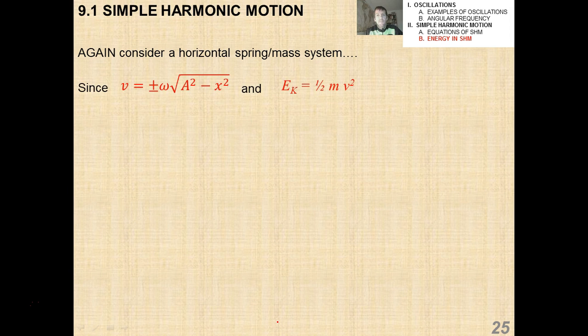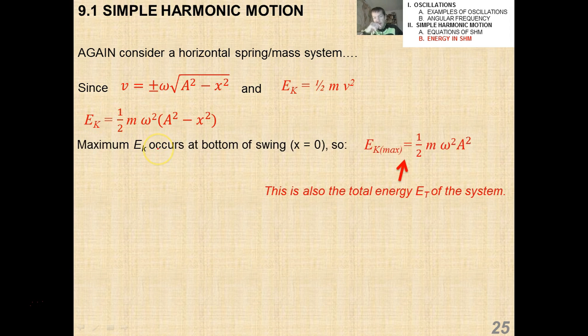So again, considering the horizontal spring mass system, we have this equation for v and this equation for the kinetic energy. And kinetic energy, if I just square this term, I also get another version of kinetic energy. It has one-half m omega squared times the quantity a squared minus x squared. Now the maximum kinetic energy occurs at the bottom of its swing, or at its minimum displacement. So this is also the total energy of the system.